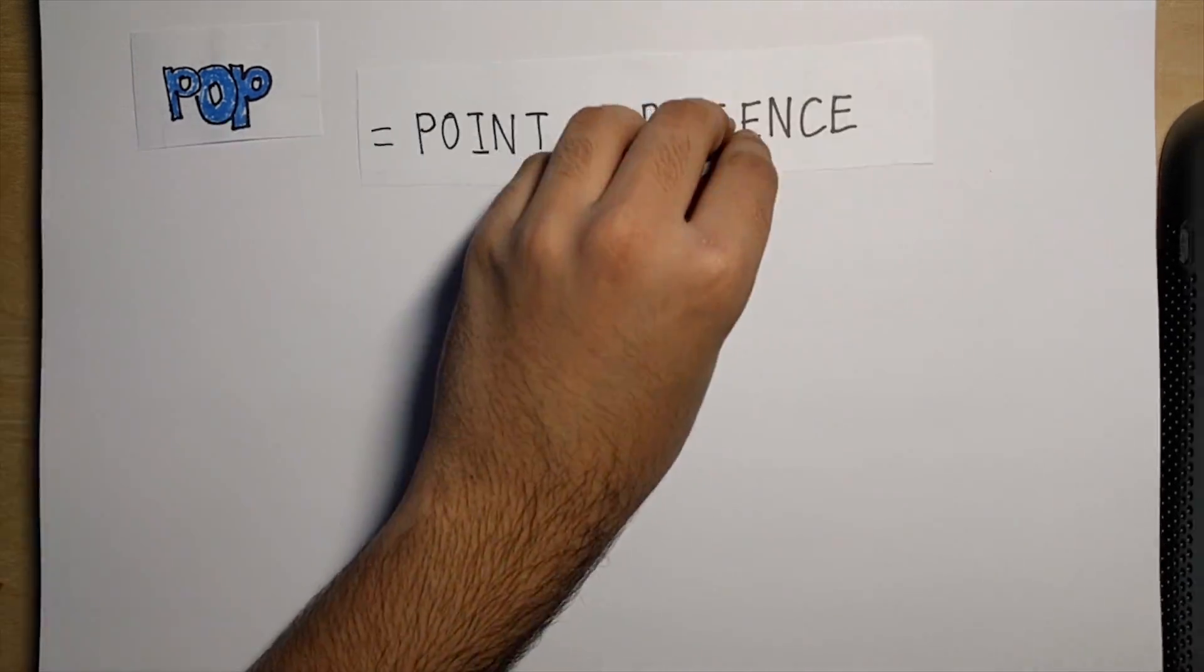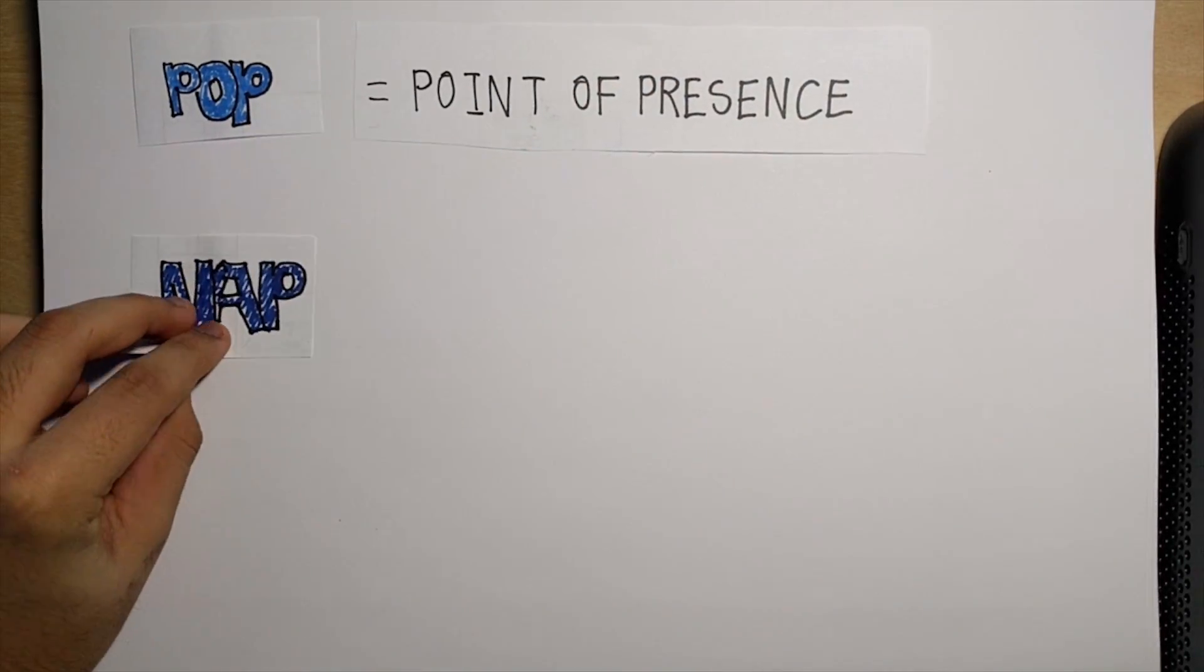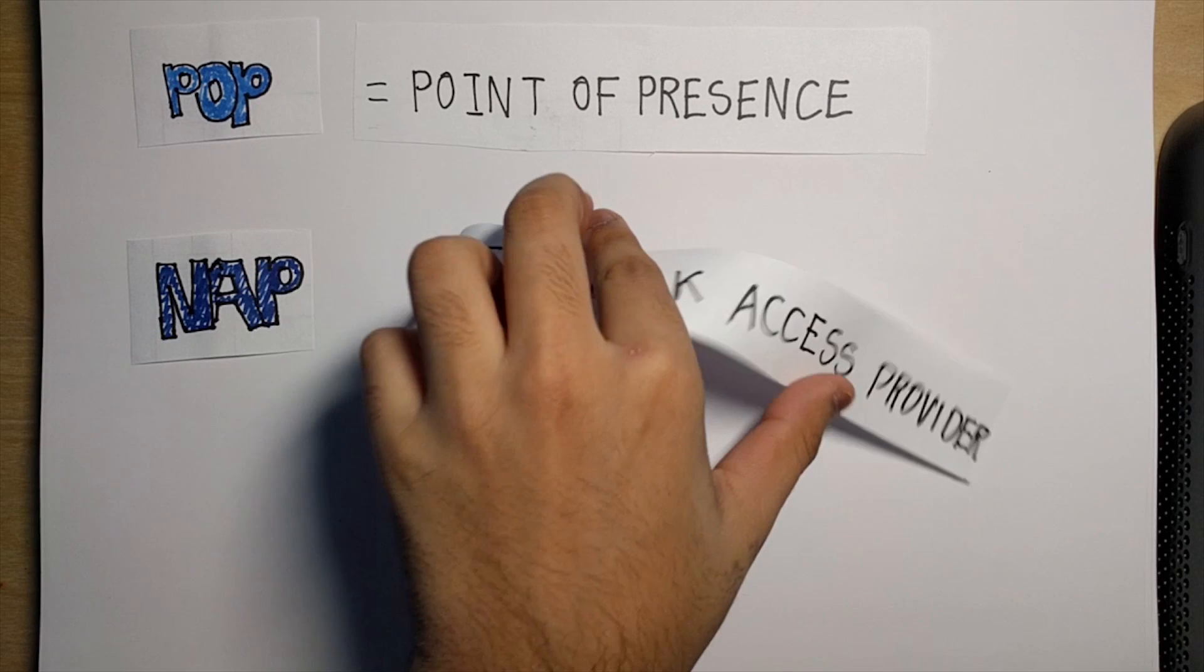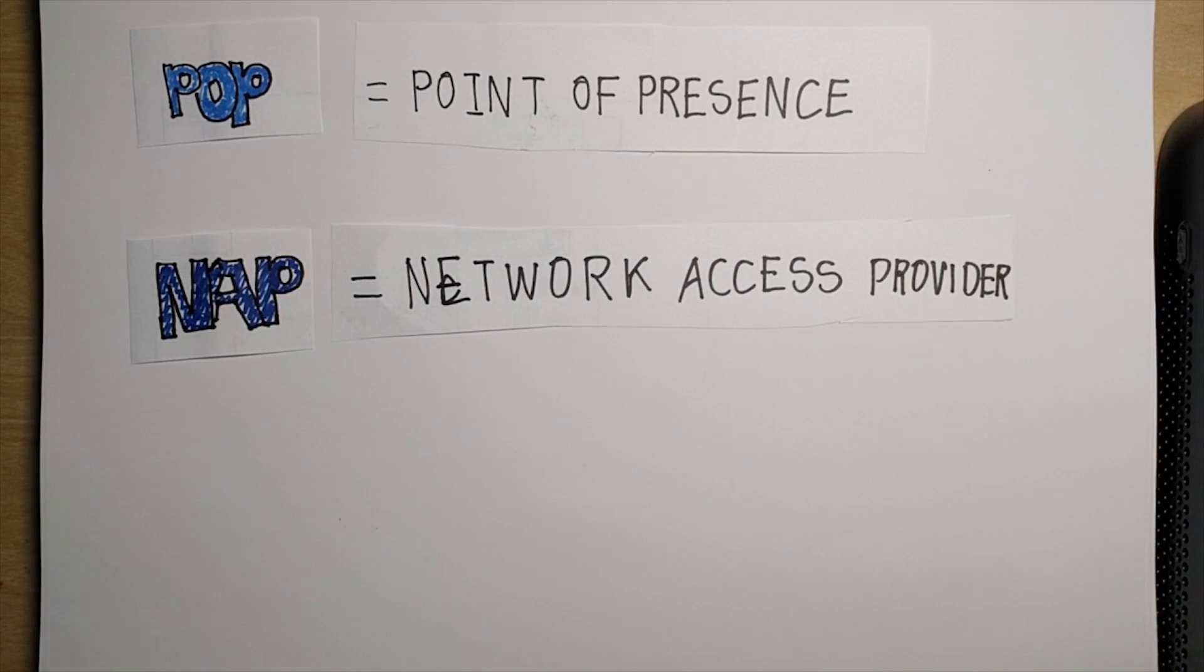Now that we have a solidified understanding, we can connect some terminology. When you use a device on the internet, it is a point of presence or a POP, and the internet service provider is a NAP, or a network access provider, who allows you to get onto the internet.